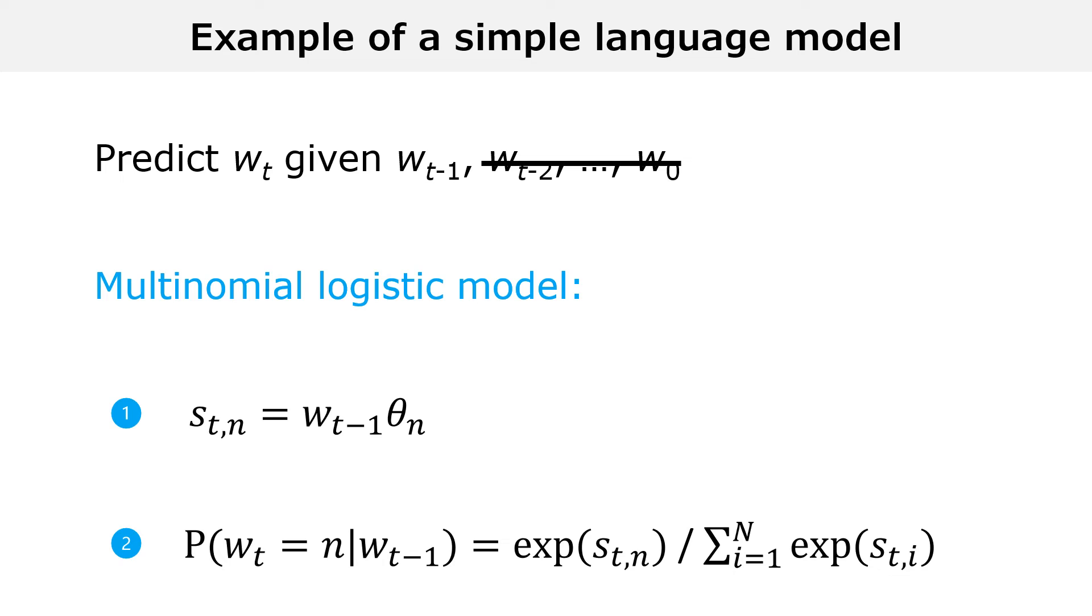The ways in which this model is made more complex are basically two. First, in a real-world situation we do not use only the last token to compute the scores, but we use many previous tokens, possibly thousands of them. Second, we do not use a simple linear function to compute the scores, but we use complicated non-linear functions called neural networks.